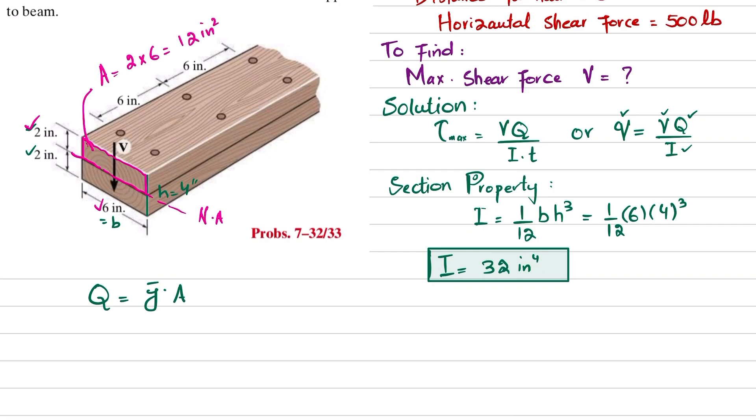Now what will be y-dash? So y-dash will be the distance from neutral axis till mid of this area. It will be 2 divided by 2, which is 1 inch, because it will be in the middle of this 2 inch section.